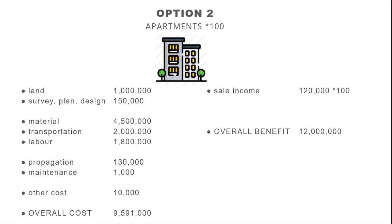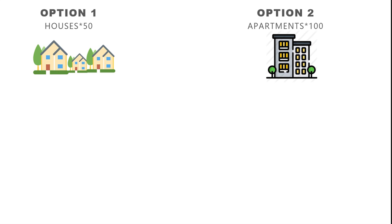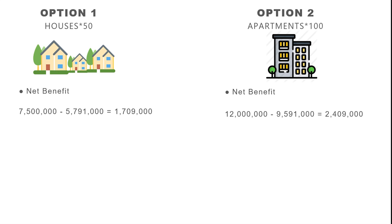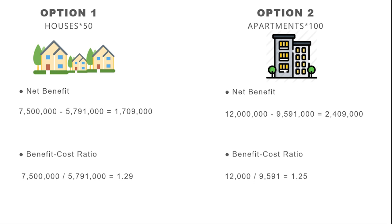Here is the first step of cost-benefit analysis: define all financial inputs and outputs, quantify and list them in an organized way. The second step is to calculate net benefit — total benefit minus total cost. For option one, net benefit is about €1.7 million; for option two, it is €2.4 million. Option two has a greater net benefit, so we might go for option two — but not exactly. Looking at the benefit-cost ratio, option one gives €1.29 per euro spent while option two gives €1.25. Option one earns €0.04 more per euro, which is actually 16% more in terms of net profit. In this sense, option one is more effective in earning money.